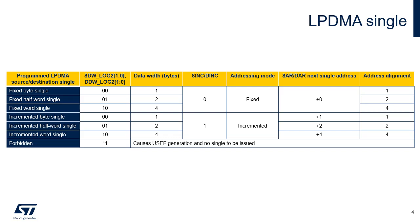An LPDMA single data width is 1, 2, or 4 bytes as defined by the two LSBs of the SDW-Log2 and DDW-Log2 fields of the LPDMA CXTR1 register. Programming the binary value 1,1 in these fields causes the user setting error flag to be set.